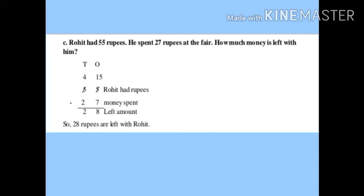Next story from your practice worksheet: Rohit had 55 rupees. He spent 27 rupees at the fair — how much money is left with him? 'Spent' means used. Since money is being taken away, like 5 rupees minus 2 rupees leaves 3, here we do subtraction: 55 minus 27.